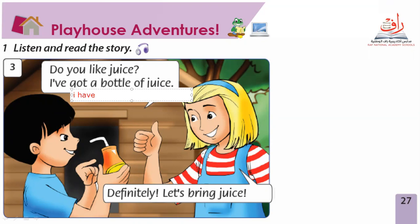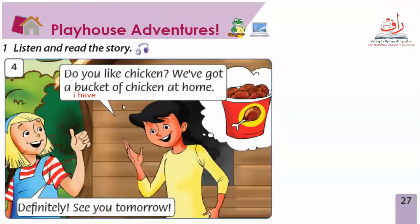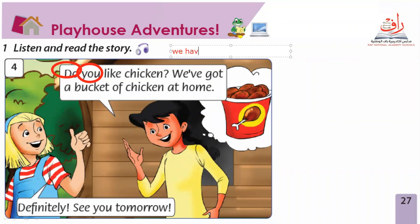Now Lily will say something. She says: 'Do you like chicken? We've got a bucket of chicken at home.' Why do we use 'do you like'? Because we use 'do' with 'you.' 'We've got' means 'we have.' Let's write the words in the book.